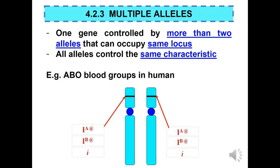The last type of deviation from Mendelian inheritance for today's lecture is multiple alleles — a situation where one gene is controlled by more than two alleles that can occupy the same locus. All alleles control the same characteristic. A good example is the ABO blood group in humans. All dominant alleles are represented by capital letter I, while the recessive allele is represented by lowercase i. The type of antigen produced is represented by superscript letter A or B.